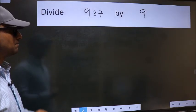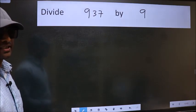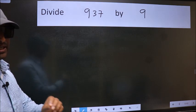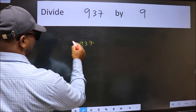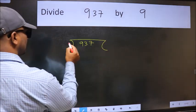Divide 937 by 9. To do this division, we should frame it in this way. 937 here and 9 here.